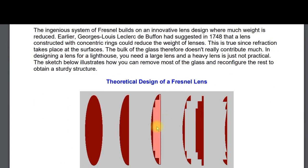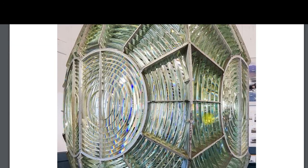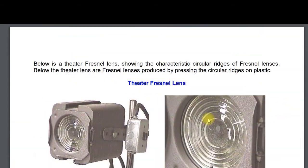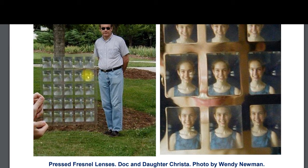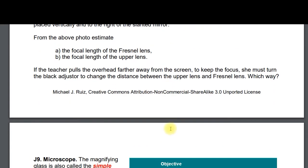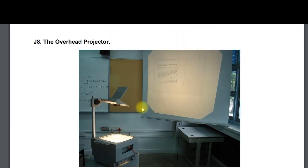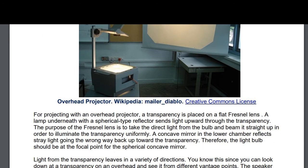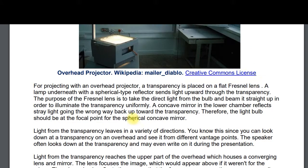For the Fresnel lens, the concept is to not use bulk glass but have a thinner glass with diverging or converging concentric circles. The overhead projector has a Fresnel lens. It's nice to read this because it's good for GRE-type questions — for example, do you pull it back to focus? Look this over.